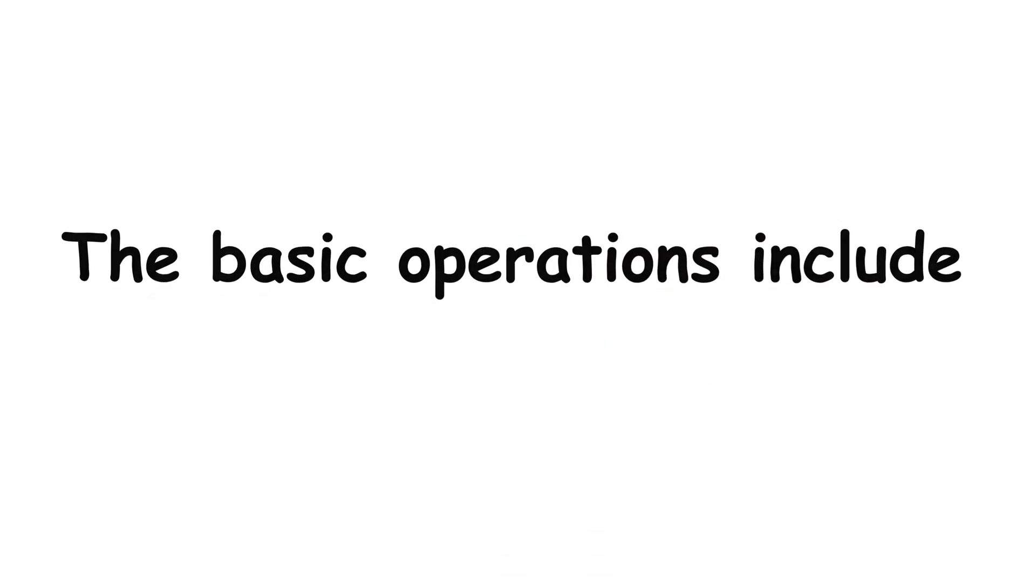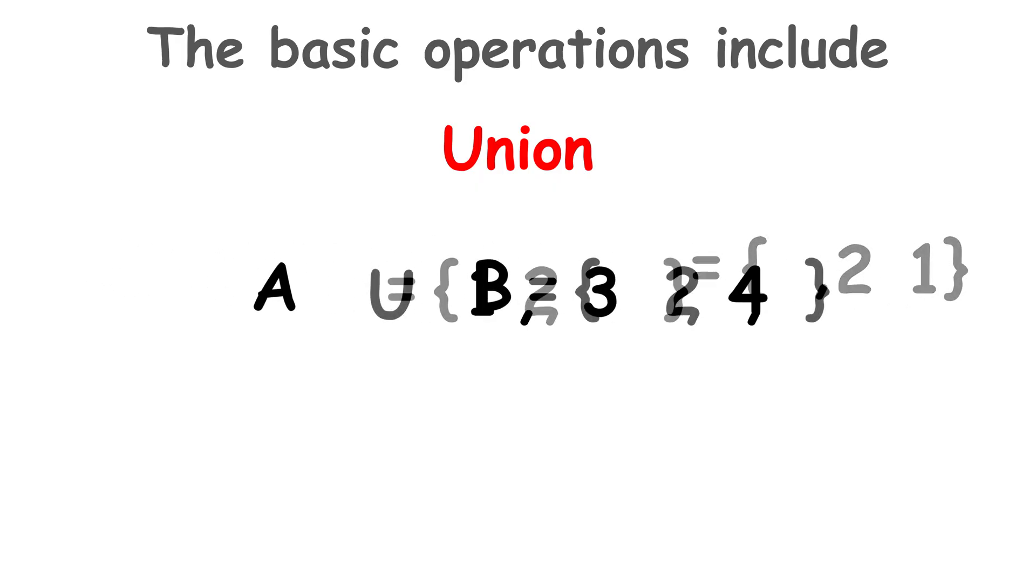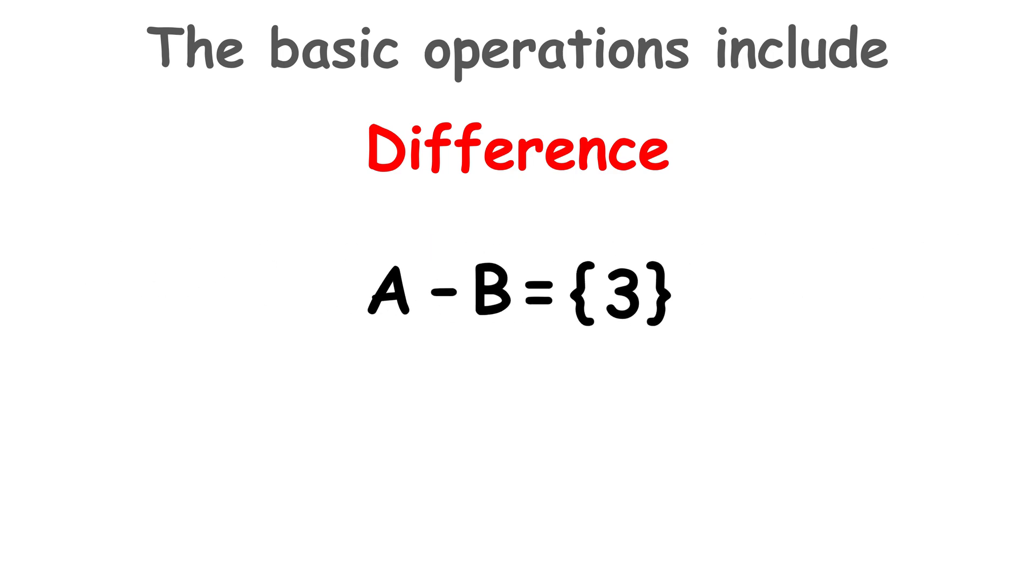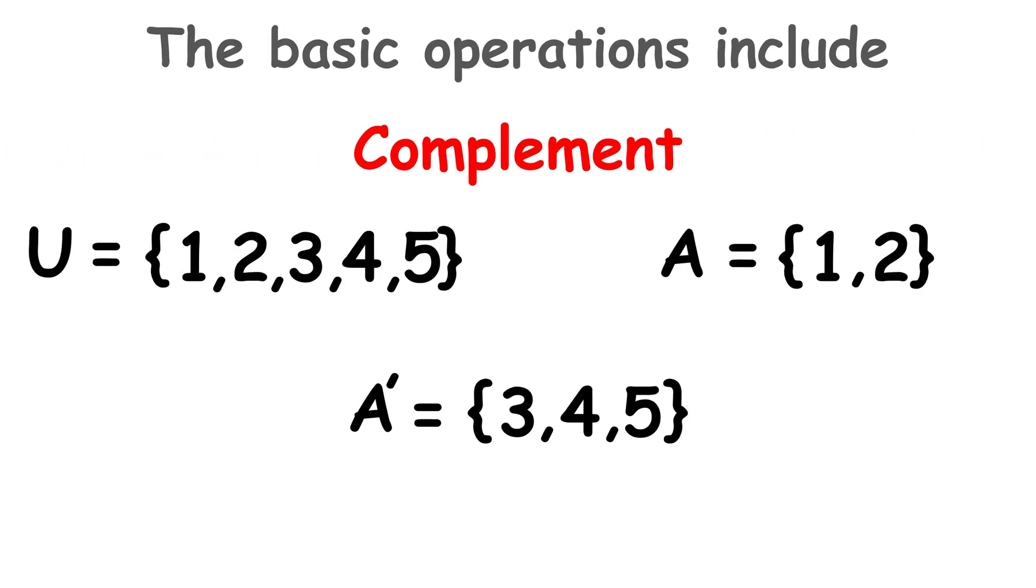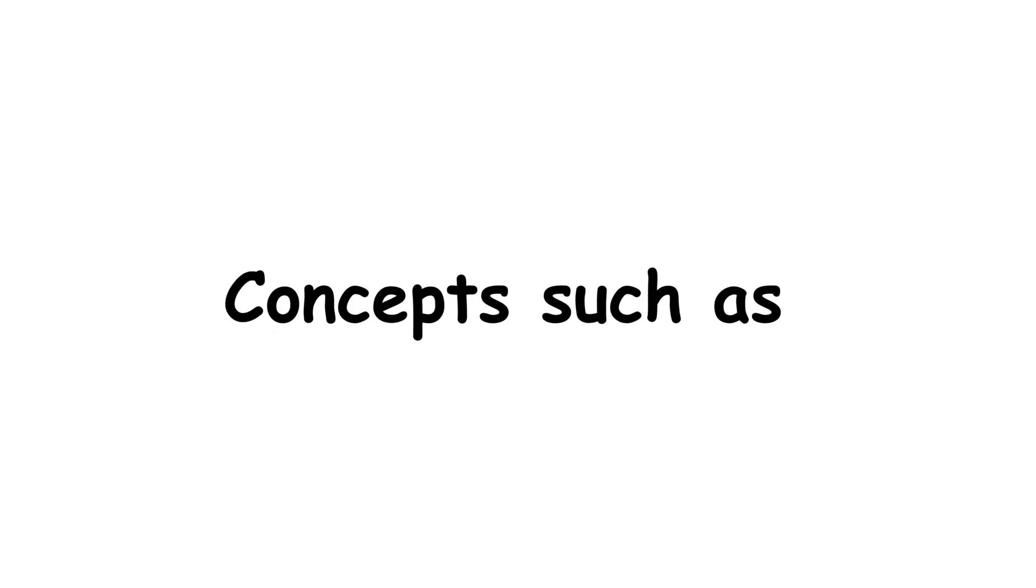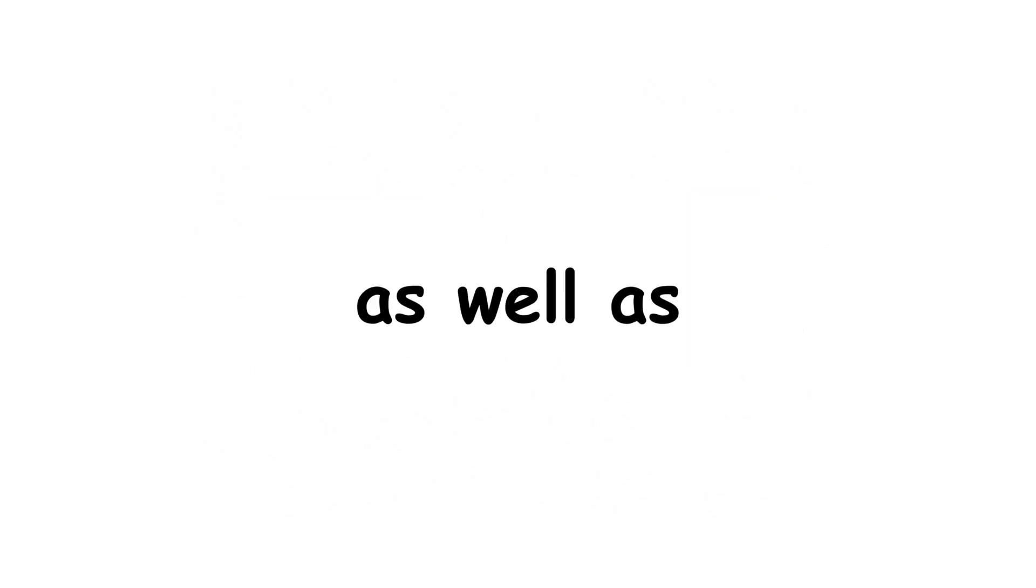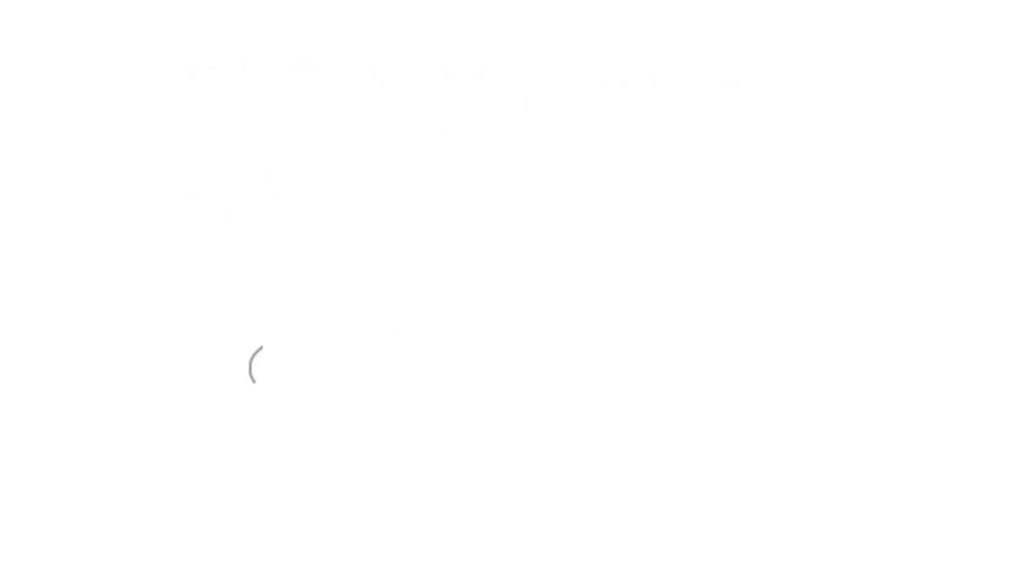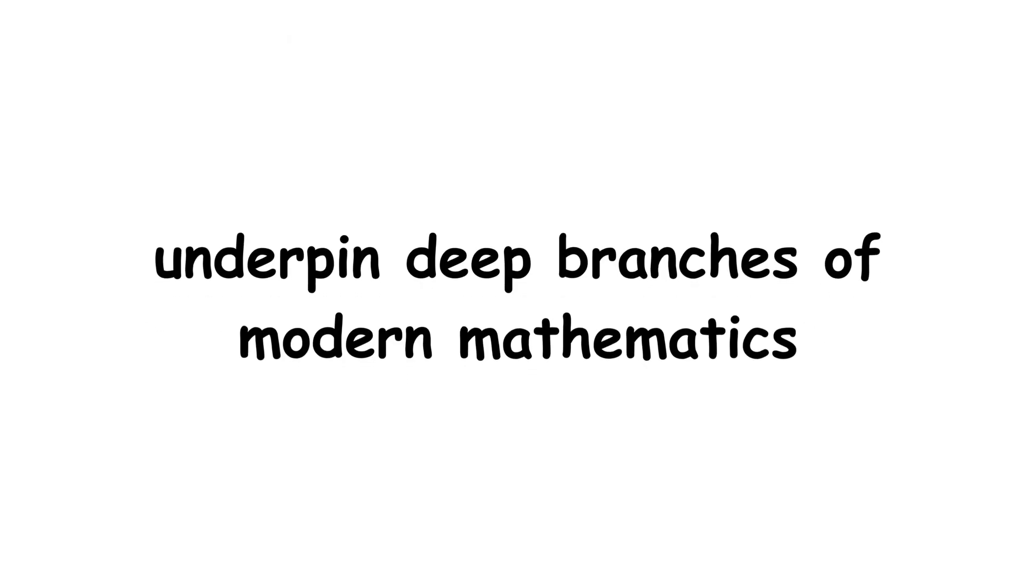The basic operations include Union (elements that are in A, in B, or in both), Intersection (common elements), Difference (elements that are in A but not in B), and Complement (groups the elements outside a given set with respect to a defined universe). Concepts such as subsets, disjoint sets, and the empty set theta are also studied. At more advanced levels, set theory addresses equipotence and cardinality, which allow the comparison of the sizes of infinities, as well as the role of ordinals in organizing well-ordered collections. Concepts such as the axiom of choice, cardinal and ordinal numbers, and the properties of infinite sets underpin deep branches of modern mathematics.